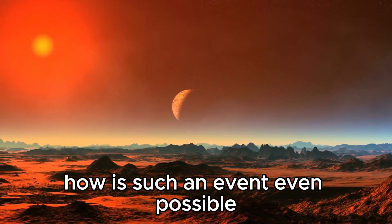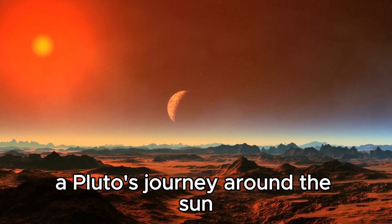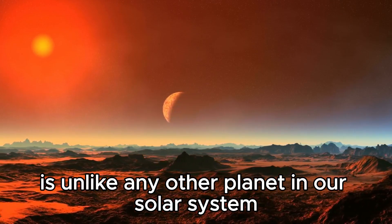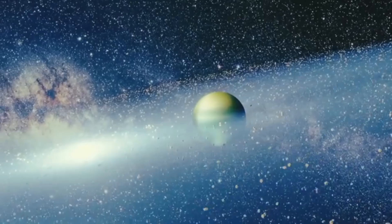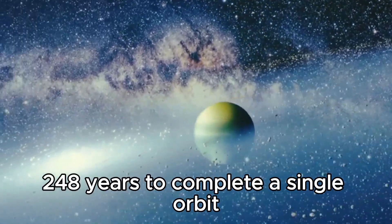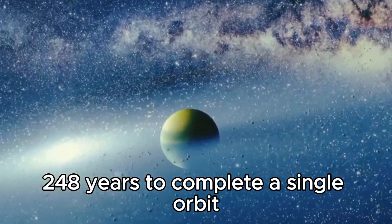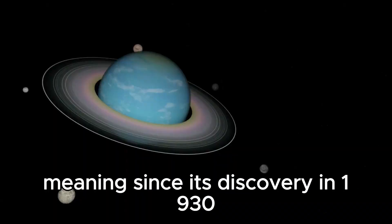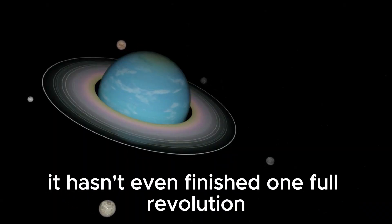How is such an event even possible? Pluto's journey around the Sun is unlike any other planet in our solar system. It takes a staggering 248 years to complete a single orbit, meaning since its discovery in 1930, it hasn't even finished one full revolution.